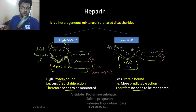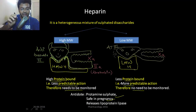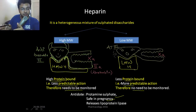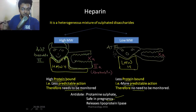The antidote of Heparin is protamine sulfate. It is safe in pregnancy because it cannot cross the placental barrier. Also, it releases lipoprotein lipase, and once released, lipoprotein lipase clears the plasma from triglycerides, making the plasma clear.